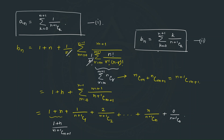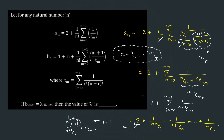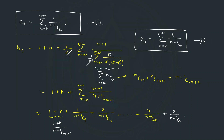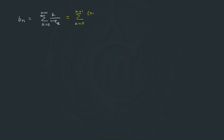If you expand bₙ you get the exact same series. Now we are asked to calculate the ratio b₂₀₂₅ divided by a₂₀₂₅ which equals λ. To find a general relation between bₙ and aₙ, we write bₙ as summation k equal to 0 to n+1 of (n+1−k) divided by (n+1)C(n+1−k).